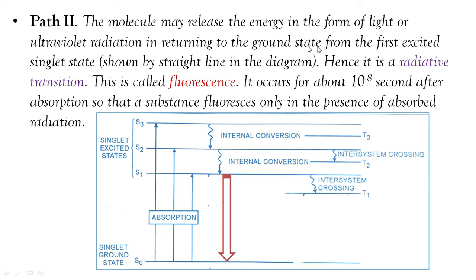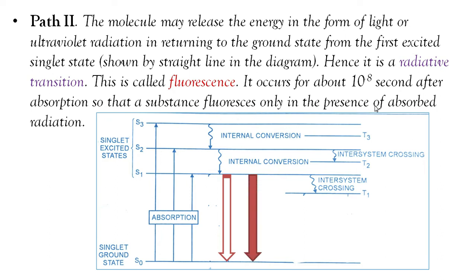The second path is where energy is released in the form of light or UV radiation as the molecule returns to ground state. This radiative transition from S1 to S0 is called fluorescence. Fluorescence has a lifetime of about 10⁻⁸ seconds. The emitted radiation has a different wavelength from the absorbed radiation.